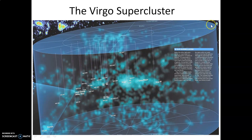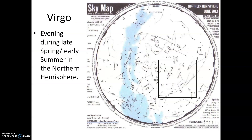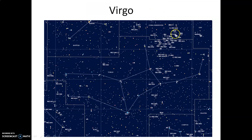The Virgo supercluster spans about 100 million light years from one side to the other. The local group, where the Milky Way is located, is roughly 50 million light years from the center of the Virgo supercluster. Deep at the center is the galaxy M87. Virgo is a prominent constellation high in the sky during late spring and early summer. Looking southwest after sunset in June, we are looking toward the center of the Virgo supercluster — each small oval on the detailed map represents an individual galaxy.